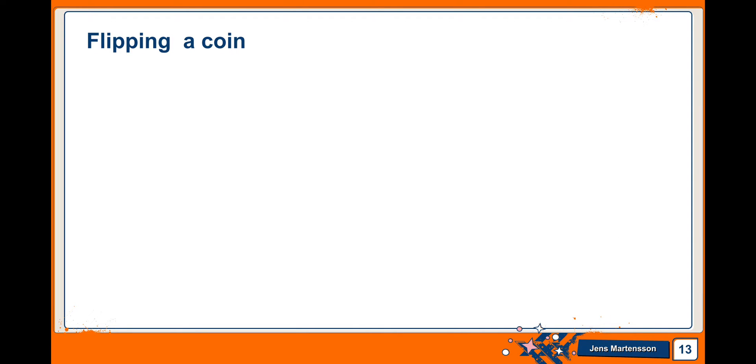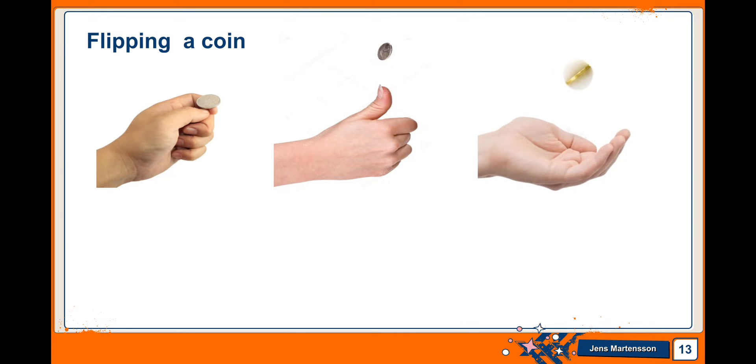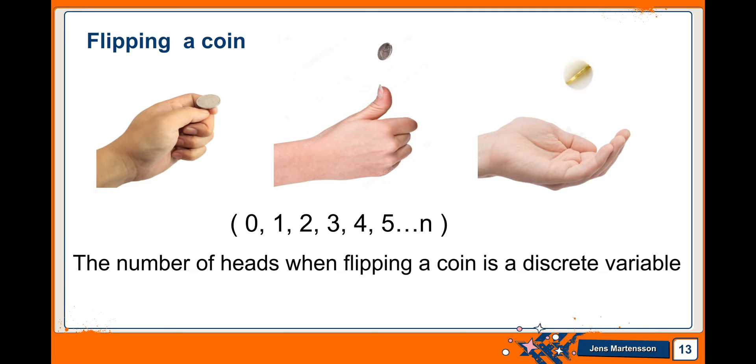Suppose we flip a coin several times and count the number of heads. The number of heads could be only any whole number value. We could not, for example, get 7.8 heads. We could only get the number of 0, 1, 2, 3, 4, 5, and so on. Therefore, the number of heads when flipping a coin is a discrete variable. And the possible values of the variable 0, 1, 2, 3, 4, 5, where n is the total number of times the coin is flipped.